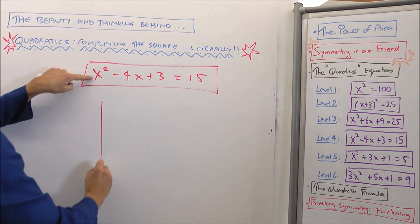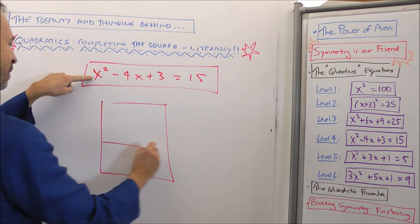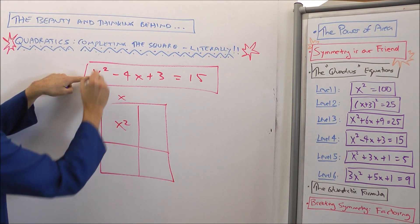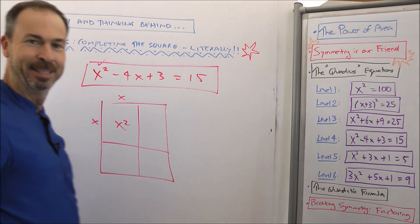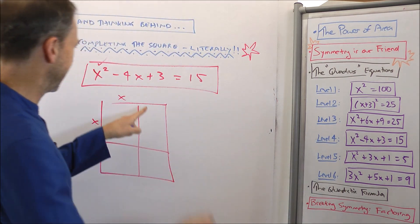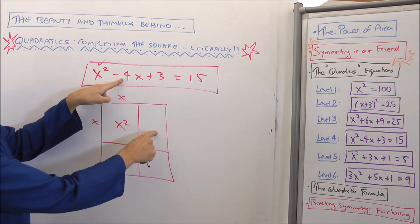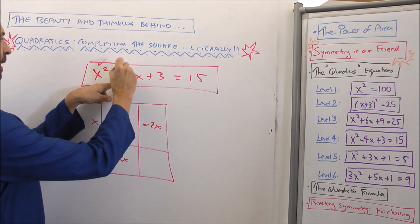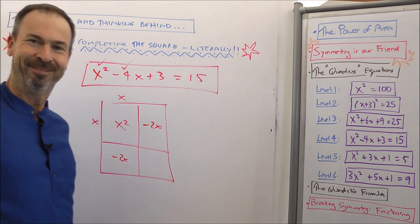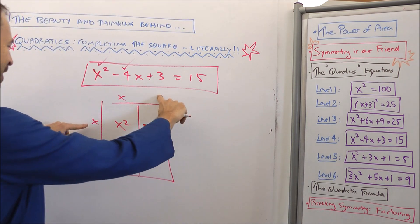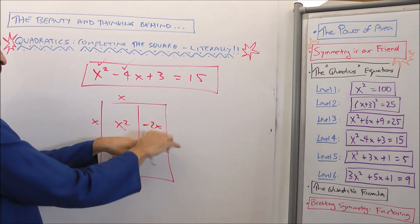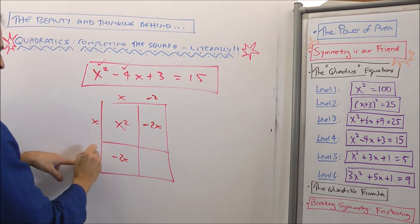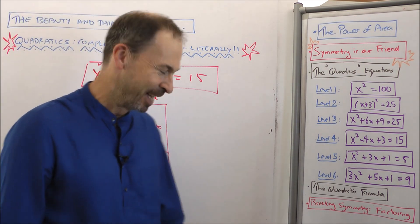x squared — fine. I'll draw a square. I know I want to draw a complete picture of a square, x by x. Now I want an area of negative 4x, but I want to be symmetrical, so negative 2x and negative 2x. Something times x makes negative 2x, so this will be negative 2. Something times x makes negative 2x — negative 2. Fabulous.